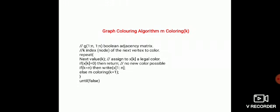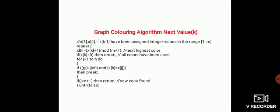After that, you have to write the desired solution. Next is m coloring problem using next value. In that, first you have to assign the next highest color, where x of k equals x of k plus 1 mod m plus 1, which is assigned to the next highest color.